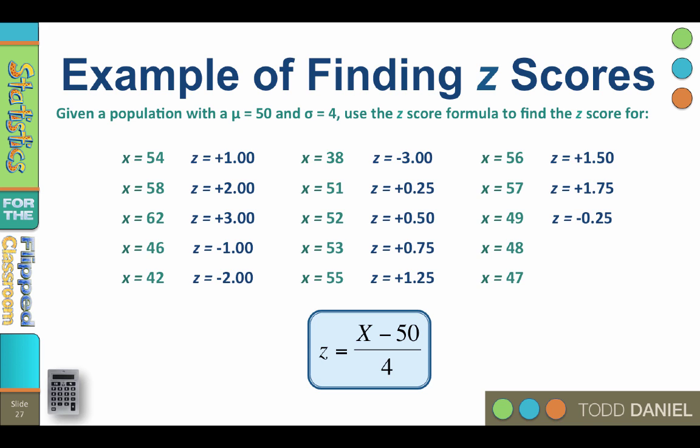For 48? z equals negative 0.50. And for 47? z equals negative 0.75.